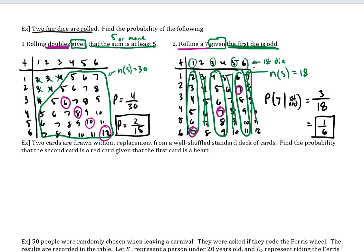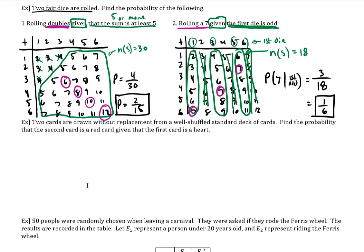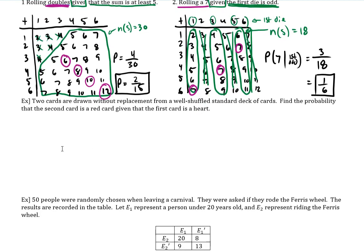So that's how we break it down — that's usually the best way to do it. In this next example, two cards are drawn without replacement from a well-shuffled standard deck of cards. Find the probability that the second card is a red card given that the first card is a heart.